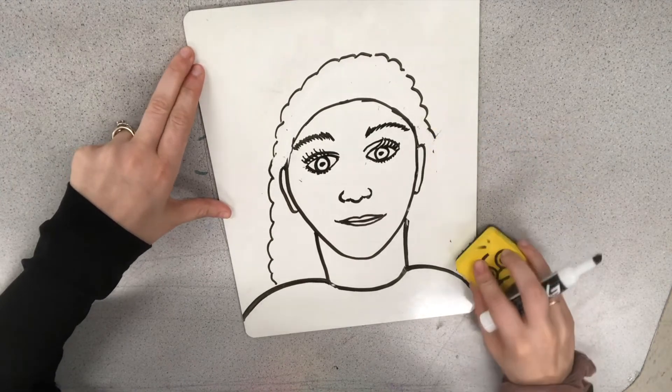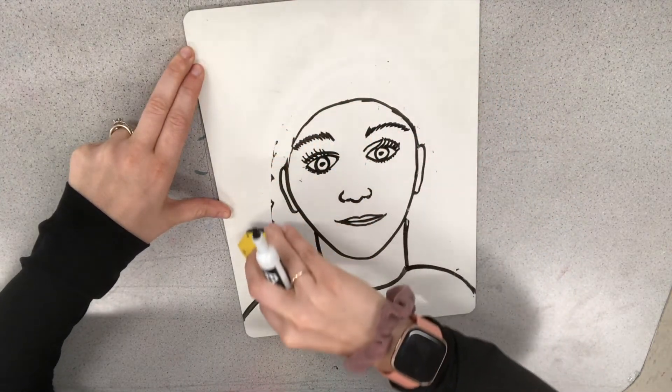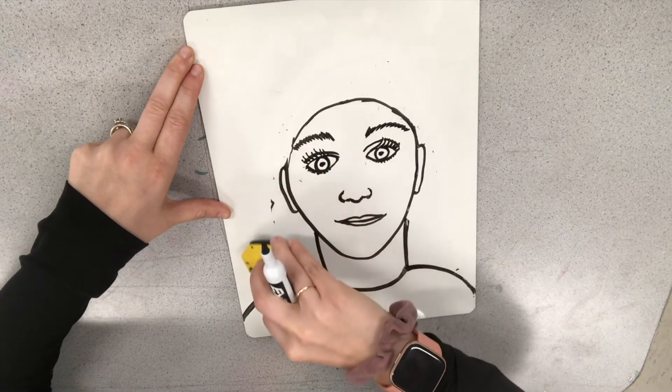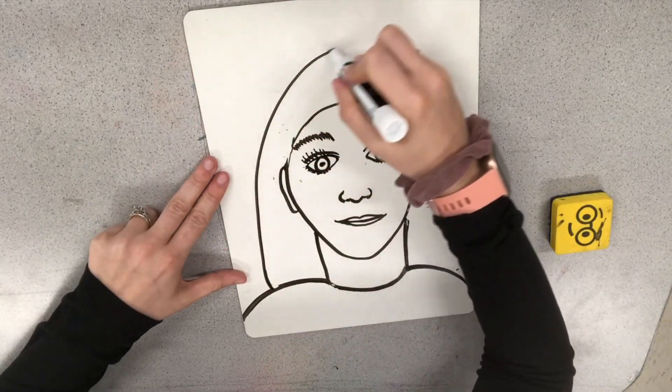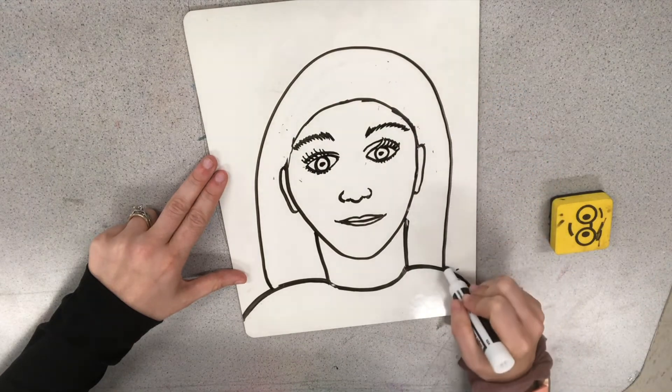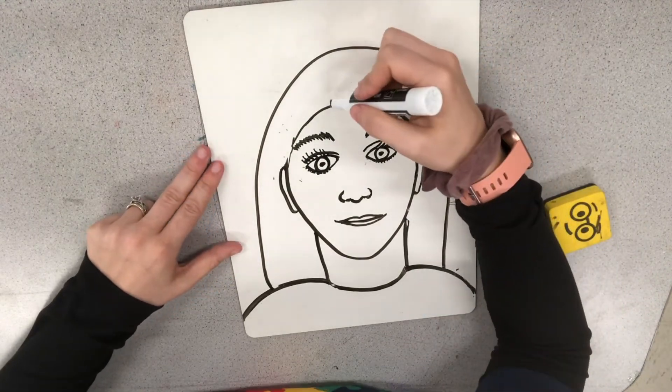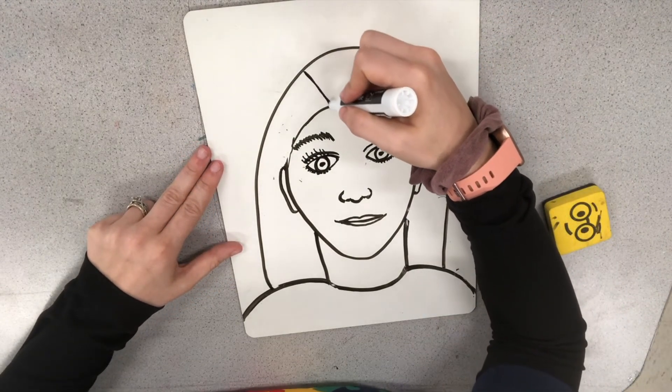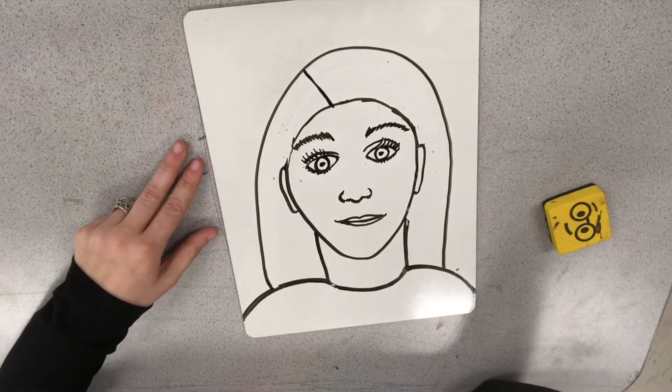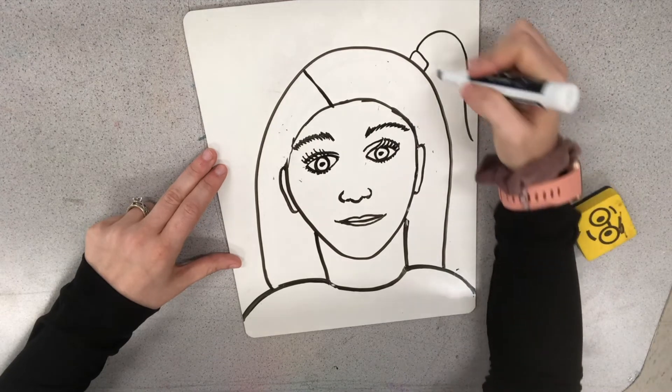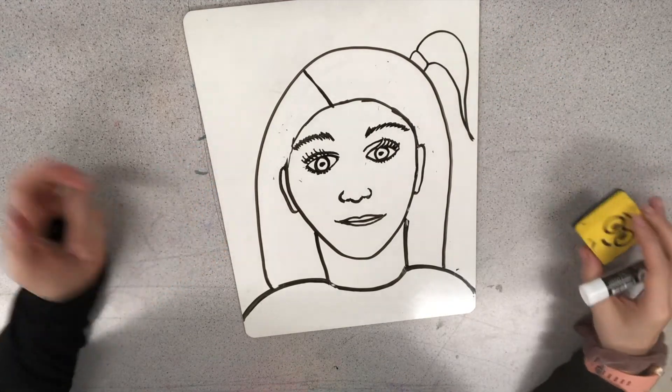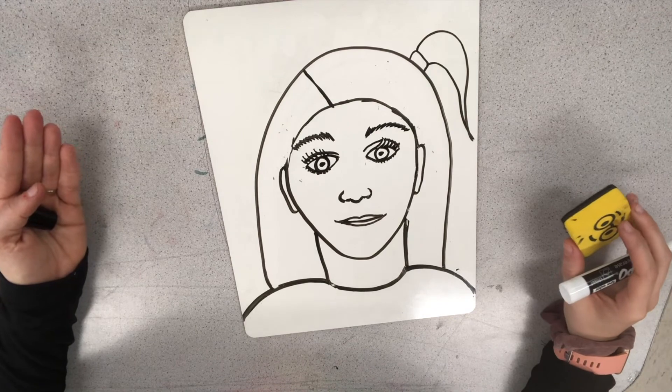It could also be long straight hair. So I'm going to erase that line. And I'm going to add in some long straight hair. And there could be, your hair could be parted to the side. Or your person's hair could be parted to the side. Maybe they have a ponytail in. There's so many different hairstyles that you could add.